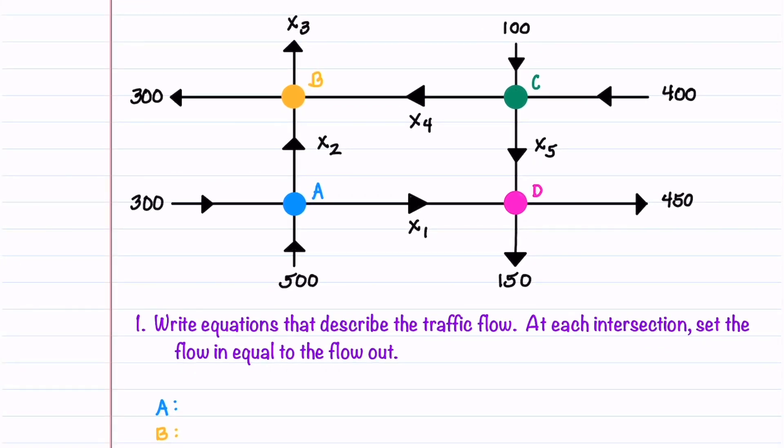We're going to start by writing equations that describe the traffic flow. At each intersection, we're going to set the flow in equal to the flow out. Let's start with intersection A.